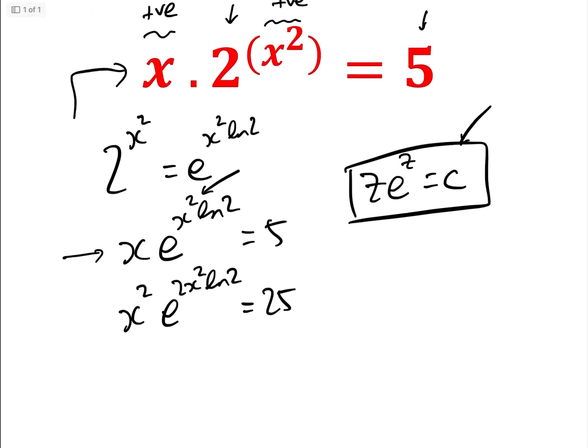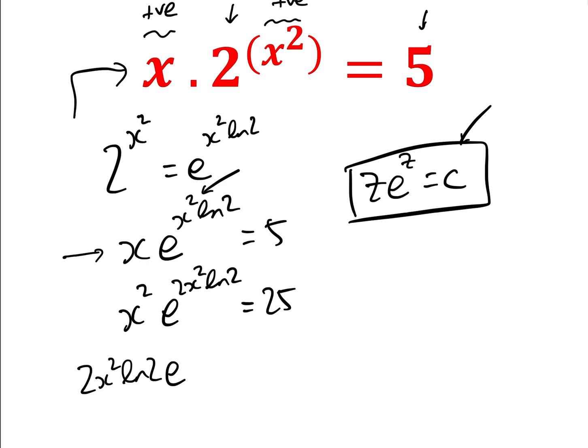Now all we need to do is multiply by 2ln2, so we have 2x²·ln2·e^(2x²·ln2) = 50ln2.